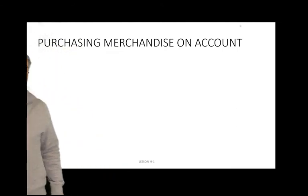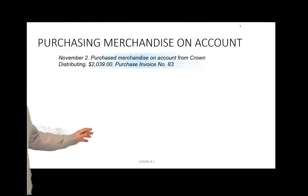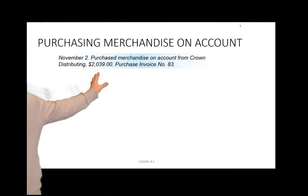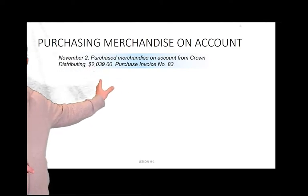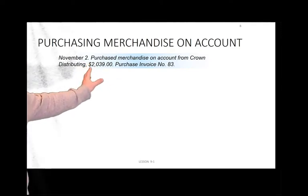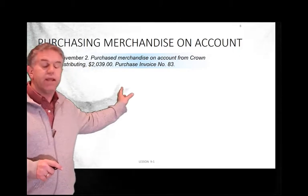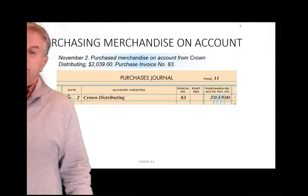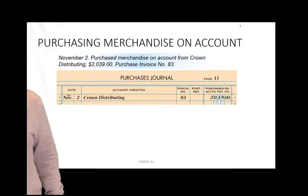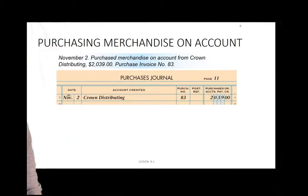So when we purchase merchandise on account, here's a transaction we're likely going to see: November 2nd, purchase merchandise on account from Crown Distributing, $22,039, purchase invoice number 83. We might also see it written as P83.